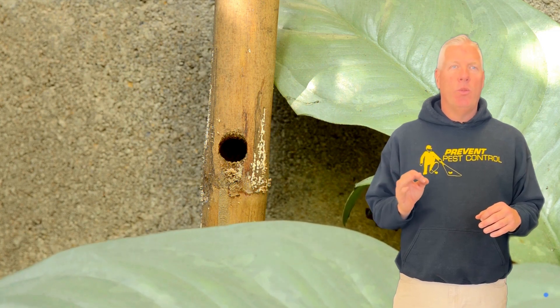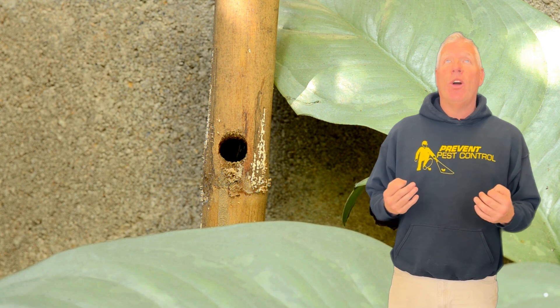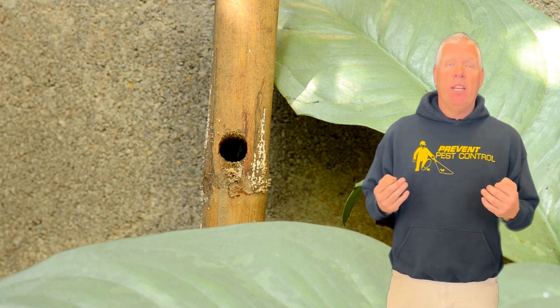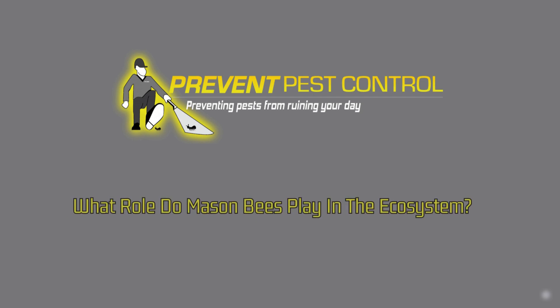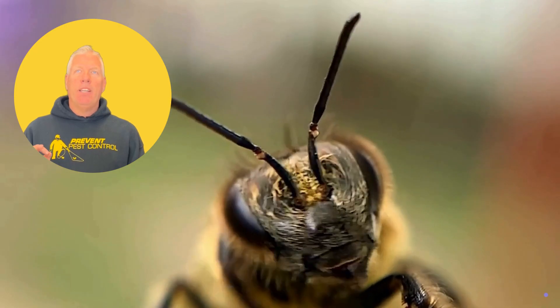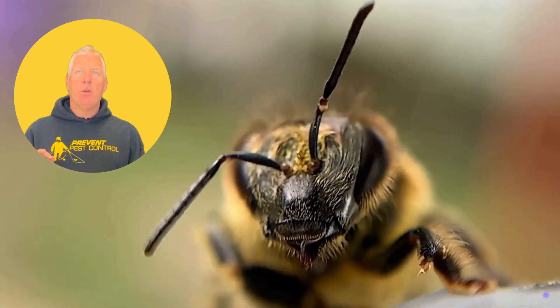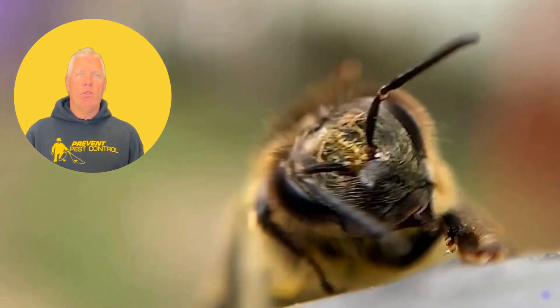Where do carpenter bees typically nest? Carpenter bees are known for their ability to drill into wood. They prefer unpainted or weathered wood surfaces where they create tunnels to lay their eggs. If you see perfectly round holes in wooden structures around your home, it might be a sign of carpenter bee activity.